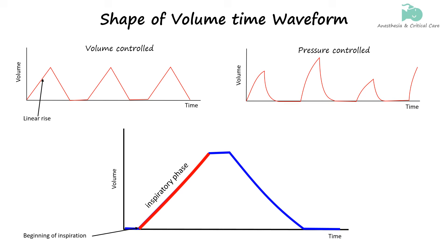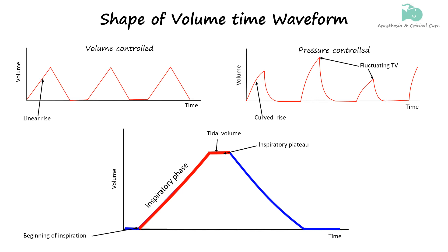In pressure-controlled modes, the rise in volume may take on a more curved or exponential shape, with fluctuating tidal volume depending on lung compliance and the pressure applied by the ventilator. The volume attained at the end of inspiration is the tidal volume. If there is a pause at the end of inspiration, known as an inspiratory hold, the waveform will display a plateau, indicating that the volume of air in the lungs is being held constant. This phase is useful for assessing plateau pressure, which provides insights into lung compliance.